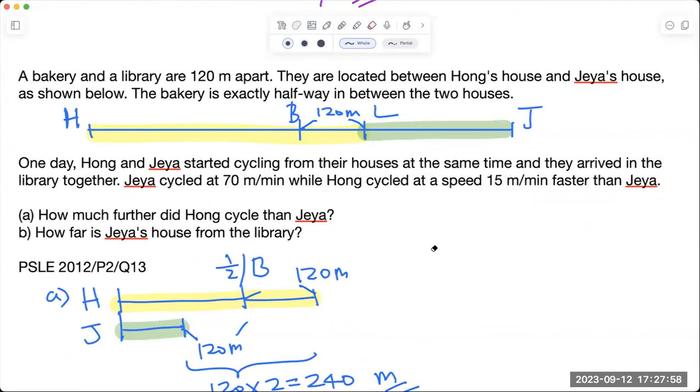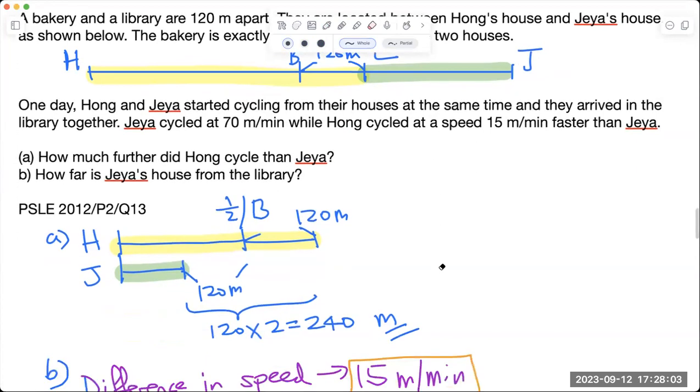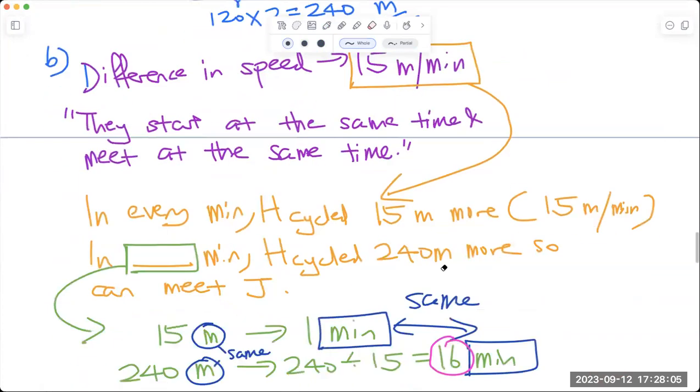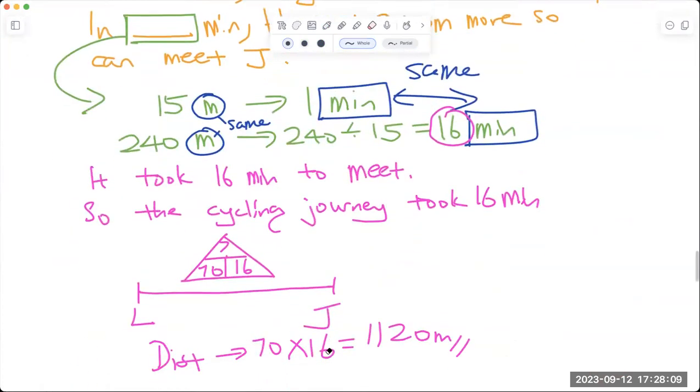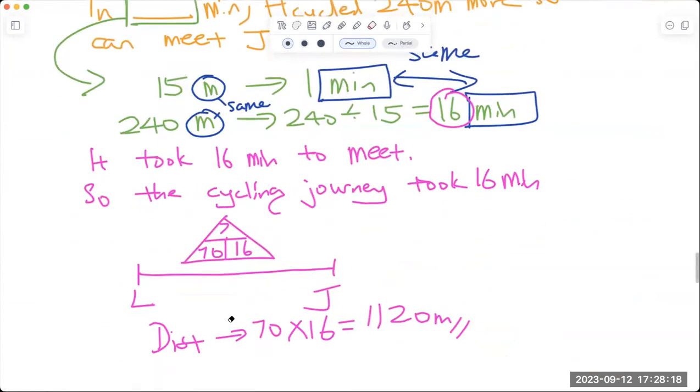What this also means is the traveling time is actually 16 minutes, and how much Hong takes is the same as how much Jaya takes. So when we are able to know how much time Jaya takes, from Jaya to the library you draw a triangle: 70 for speed, 16 is calculated from the top, you can find the distance which is 70 times 16, and you get 1120 meters. And that's your answer.